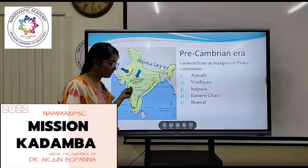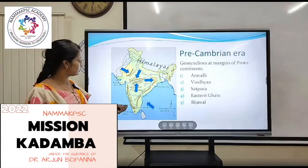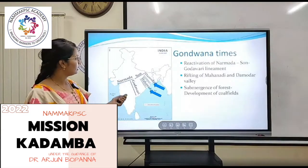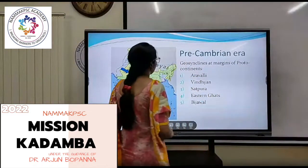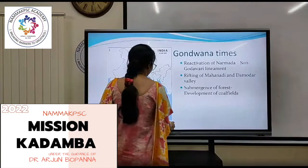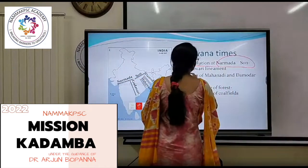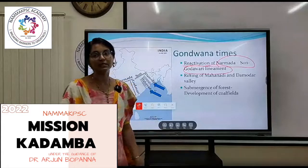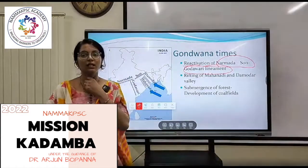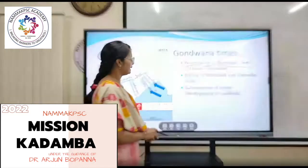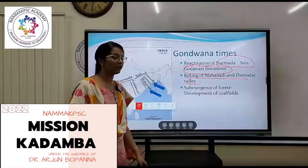This is your Aravalli, Vindhya, Satpuras, the Bijawals, Eastern Ghats. And then, in the Gondwana period, there was reactivation of the Narmada-Son-Godavari liniment. We have to talk about the reactivation of the Narmada, Son, and Godavari liniment, where the rifting of Mahanadi and Damodar Valley was seen.